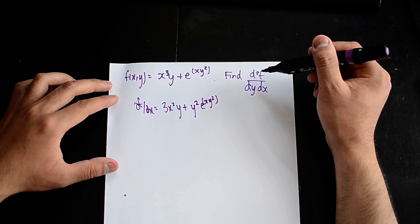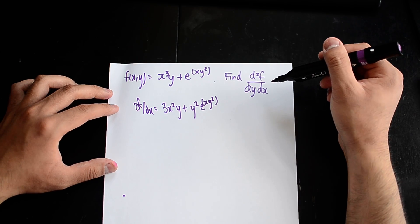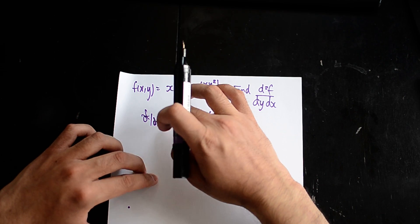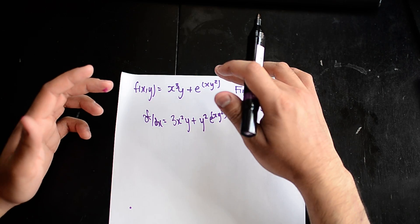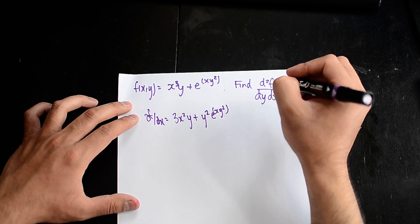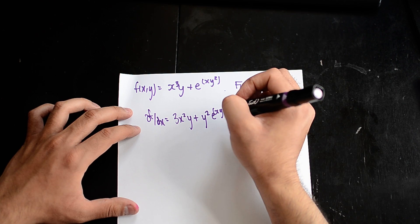But I need to find what d²f over dy dx is, so I'm going to now differentiate df by dx, holding the x term as constant, so differentiating the y. So now that means I'll be finding out what this is.